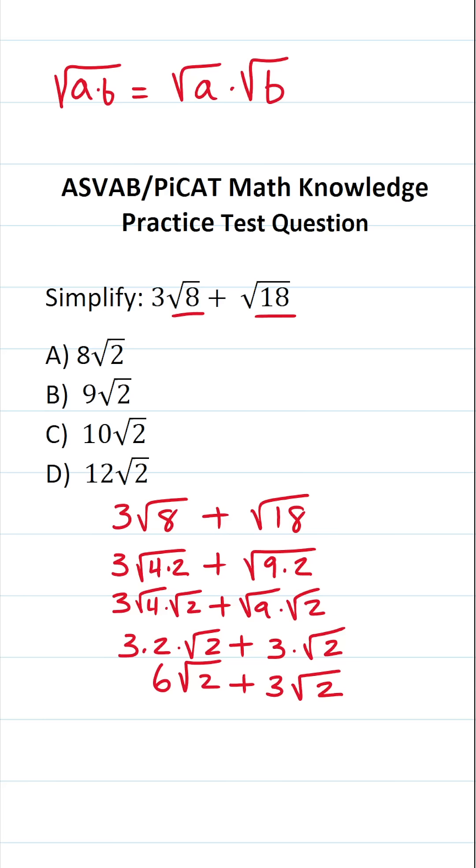Now that these have the same radical, all we can do is add them. 6√2 plus 3√2 is going to be 9√2. So the answer to this one is B.